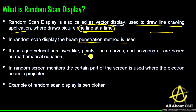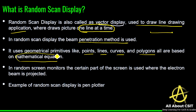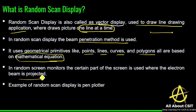Random scan display uses geometrical primitives like points, lines, curves, and polygons, all based on mathematical equations. While drawing lines, it considers points, lines, or curves completely based on mathematical equations. In random scan monitors, only a certain part of the screen is used where the electron beam is projected.